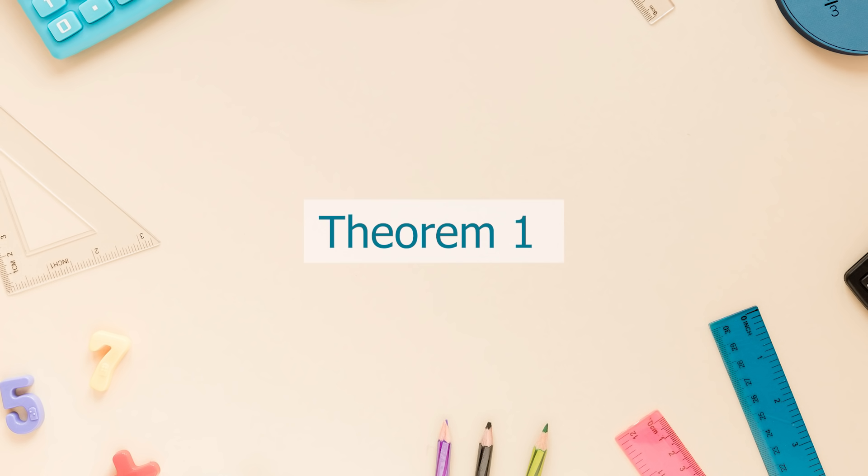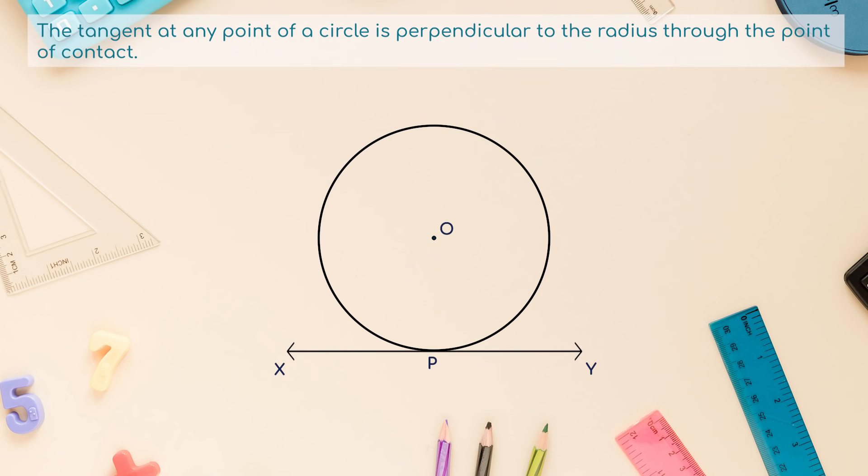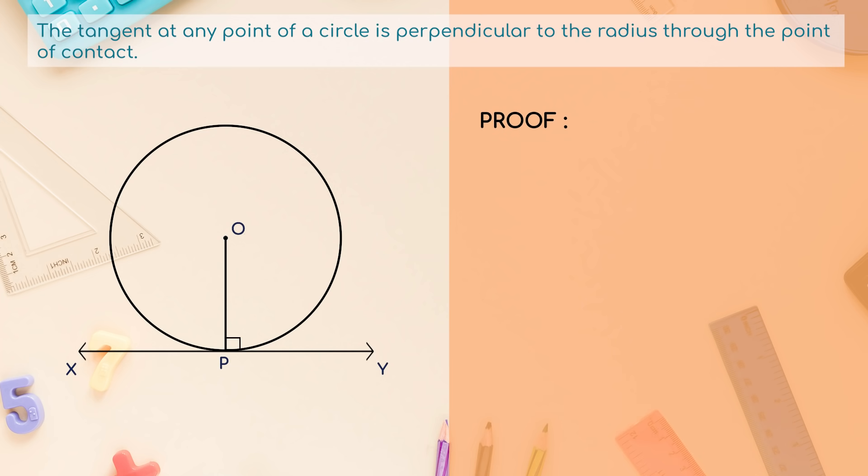Theorem 1: The tangent at any point of a circle is perpendicular to the radius through the point of contact. Proof: We are given a circle with center O and a tangent XY to the circle at a point P. We need to prove that OP is perpendicular to XY. Take a point Q on XY other than P and join OQ. The point Q must lie outside the circle.